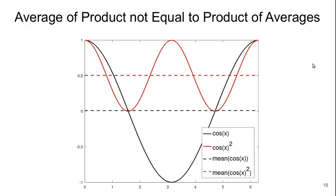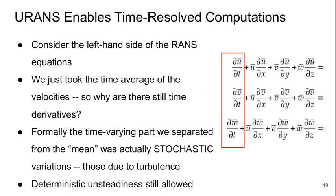So those terms that we've added to the equations are non-zero. If we have a look at the left-hand side of those RANS equations, we saw these terms that I've highlighted in red here, the d/dt terms. But wait a minute, we were just talking about the time average of the velocity. So how can there still be time derivatives? Shouldn't du̅/dt, by definition, be zero? Well, this is a little bit of a hand-waving trick.